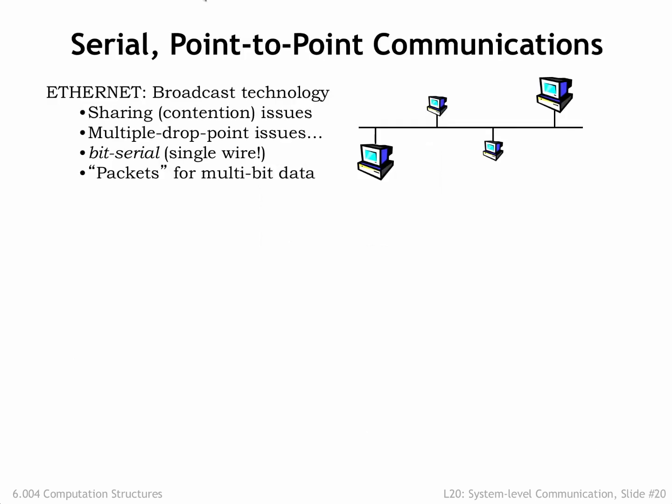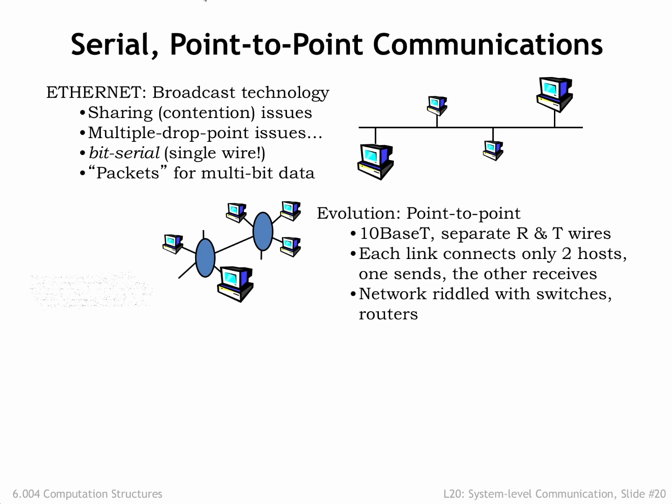Using these lessons, networks have evolved from using shared communication channels to using point-to-point links. Today, local area networks use 10, 100, or 1000 base T wiring, which includes separate differential pairs for sending and receiving. In other words, each sending or receiving channel is unidirectional with a single driver and single receiver.